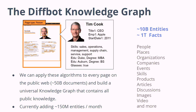We applied this to basically every page on the public web — about 50 to now 70 billion documents. Our crawl is as comprehensive as Google's and even deeper in certain sites because we use technologies like rendering and distributed dynamic proxies to crawl really deeply. Our system is autonomously acquiring about 150 million entities per month.